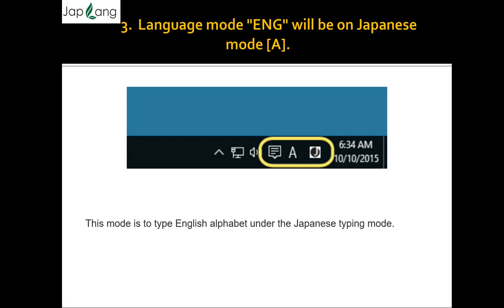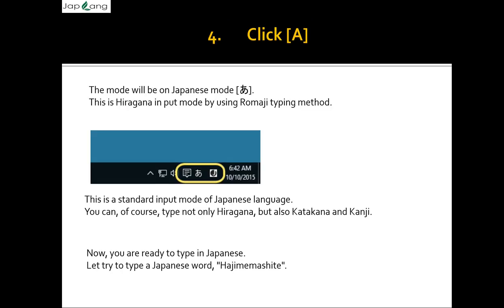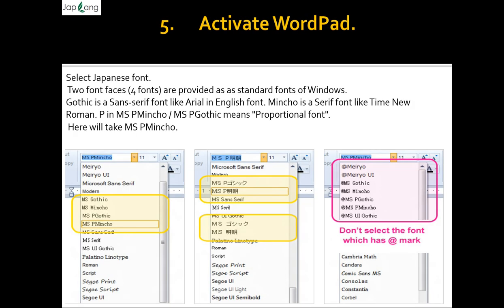The language mode will switch from English to Japanese mode 'A'. This mode is to type English alphabet under Japanese typing mode. Click 'A' to switch to hiragana input mode using Romaji typing — this is the standard input mode for Japanese language. You can type not only hiragana but also katakana and kanji. Now you are ready to type in Japanese. Let's try typing a Japanese phrase — 'hajimemashite'.